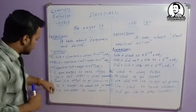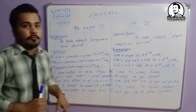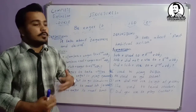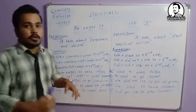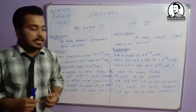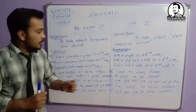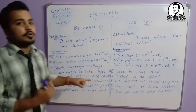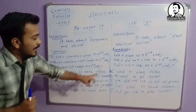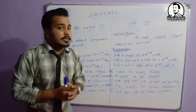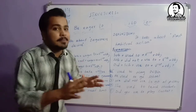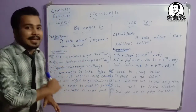First example: 'I am eager to take coffee' — mein baykaraar hoon coffee peene ke liye. We use 'take' because we don't say 'drink coffee'; take is used for coffee and tea. Second example: 'She is not eager to play games' — woh baykaraar nahi hai games ke liye. That's the negative sentence.